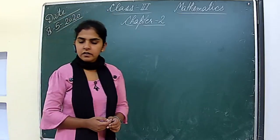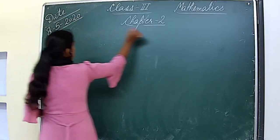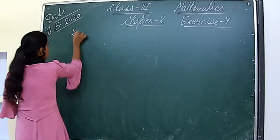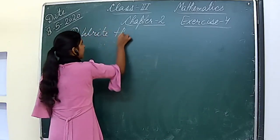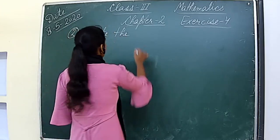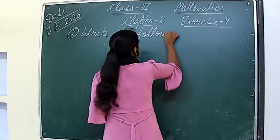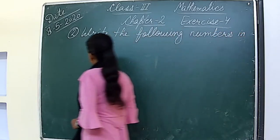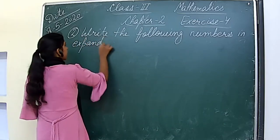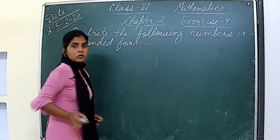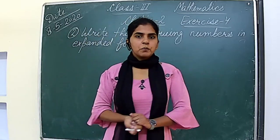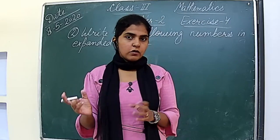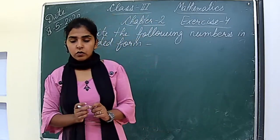Question number 2 is: write the following numbers in expanded form. As I told you yesterday, expanded form of a number is the addition of all the place values of the digits. We write all the place values of the digits of the numbers. Here also we have to do the same.